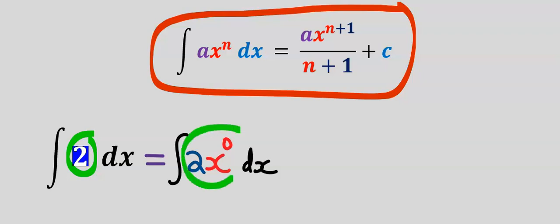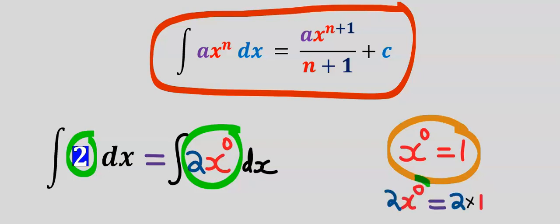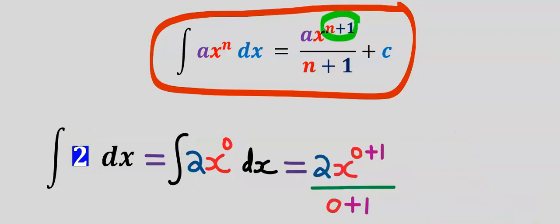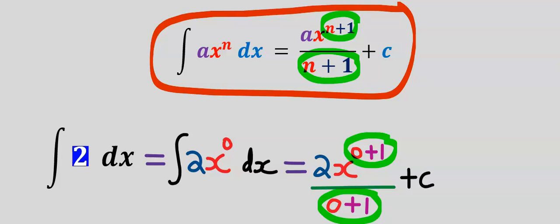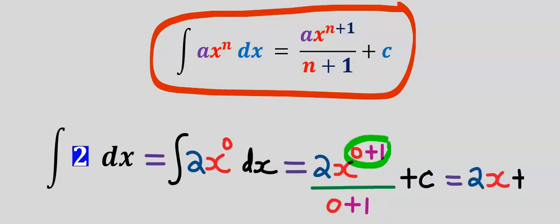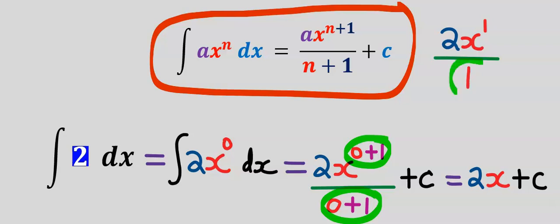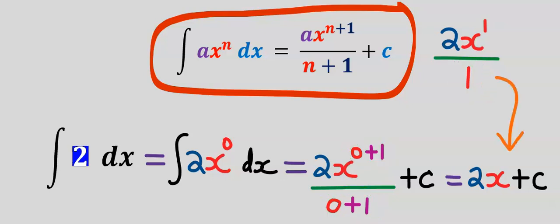Two is the same as two x to the power of zero, and x to the power of zero is equal to one. So two multiplied by x to the power of zero is two times one, which is two. Next, we add one to the power and bring everything down: zero plus one at the power of x comes down, and we add plus c. Zero plus one is one, giving us two x to the power of one over one, so our answer becomes two x plus c.